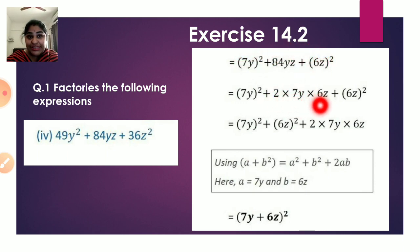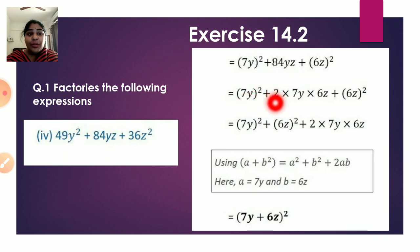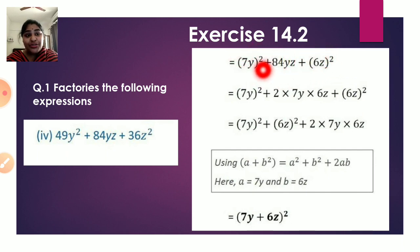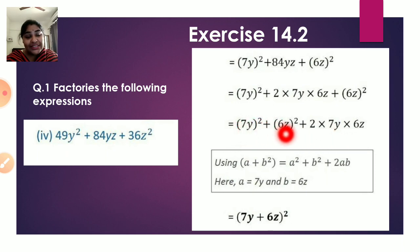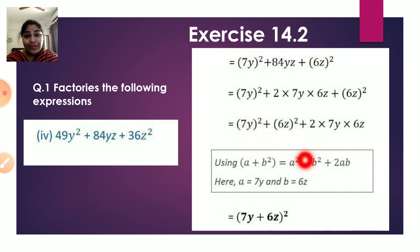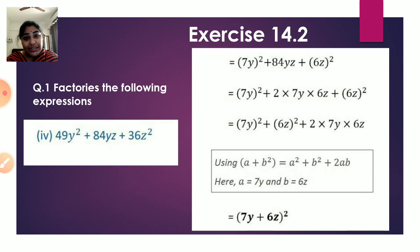We check the middle term: 2 × 7y × 6z = 84yz, which matches. So this is in the form a² + 2ab + b², where a = 7y and b = 6z. Using the identity, this equals (a + b)² = (7y + 6z)². You just need to identify the expression and determine which identity to apply.